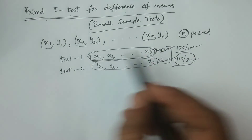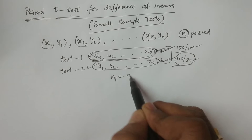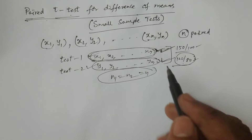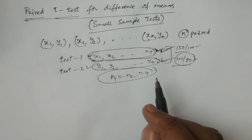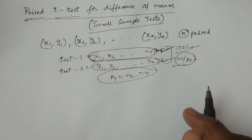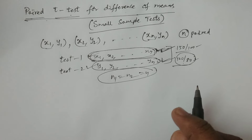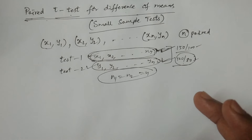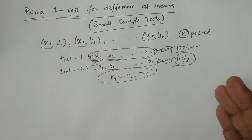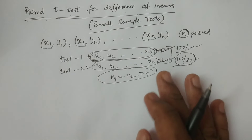Here also, two samples of readings are observed: x1, x2, …, xn and y1, y2, …, yn. But n1 is equal to n2, that is n — the same number of students. We are applying another test to the same group. Before the medicine, after the medicine, or two types of medicines — medicine one, medicine two — for the purpose of comparative studies, whether coaching is effective, whether increment or decrement is observed, this kind of test procedure is used.